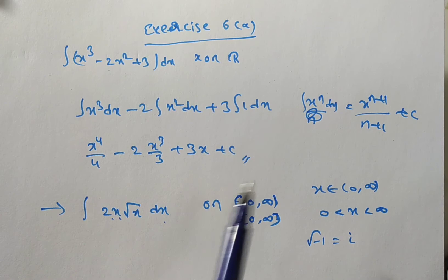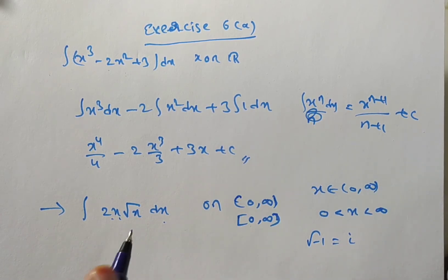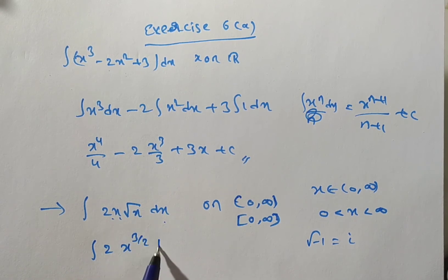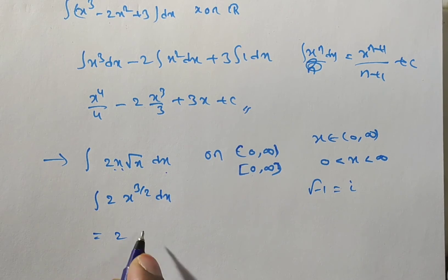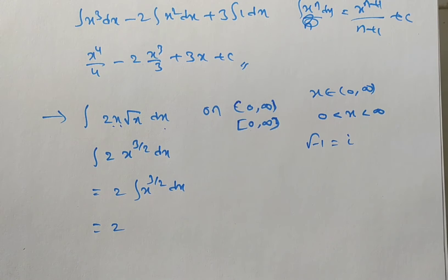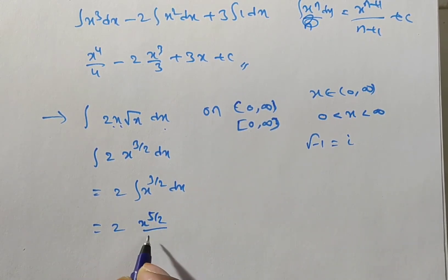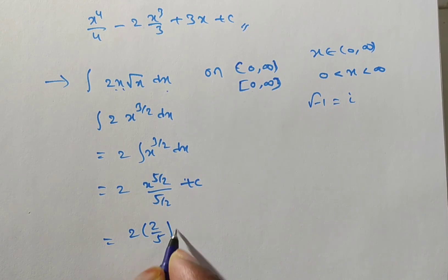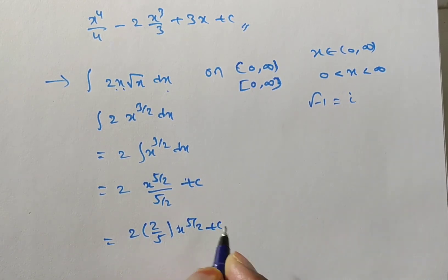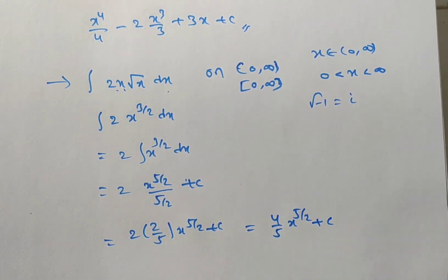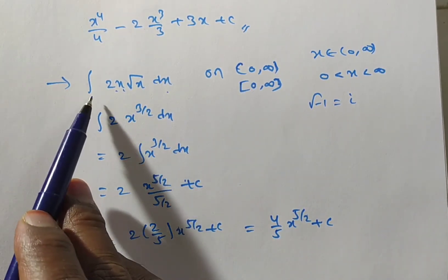Now, is 2x root x directly in the form x to the power of n? No, so we convert: 2 times x power 1 times x power 1 over 2 equals 2x to the power of 3 over 2. So the integral becomes 2 times integral x power 3 over 2 dx, which equals 2 times x power 5 over 2 divided by 5 over 2 plus c. That simplifies to 2 times 2 over 5 times x power 5 over 2, giving 4 over 5 times x to the power of 5 over 2 plus c.